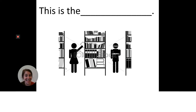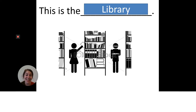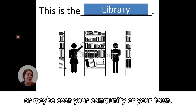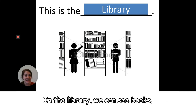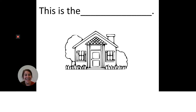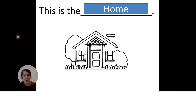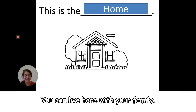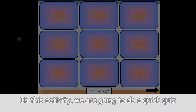This is the library. You can see a library in your school, or maybe even your community, or your town. In the library, we can see books. This is the house. You can live here with your family. This is the home.